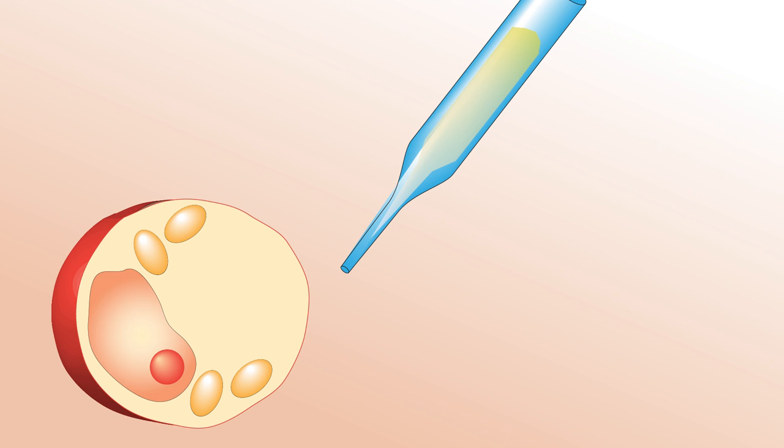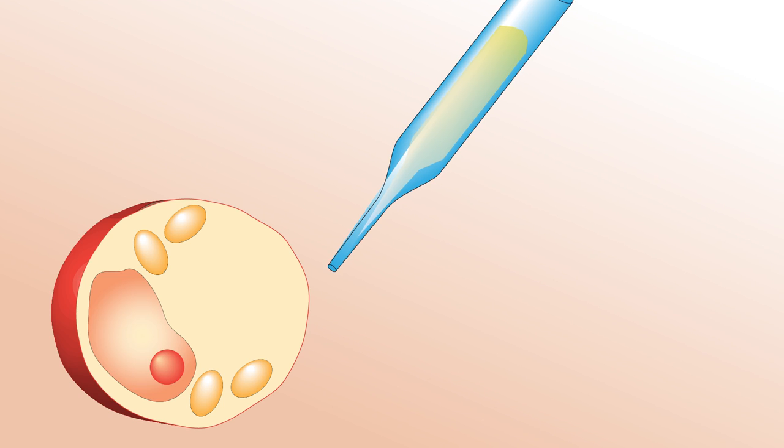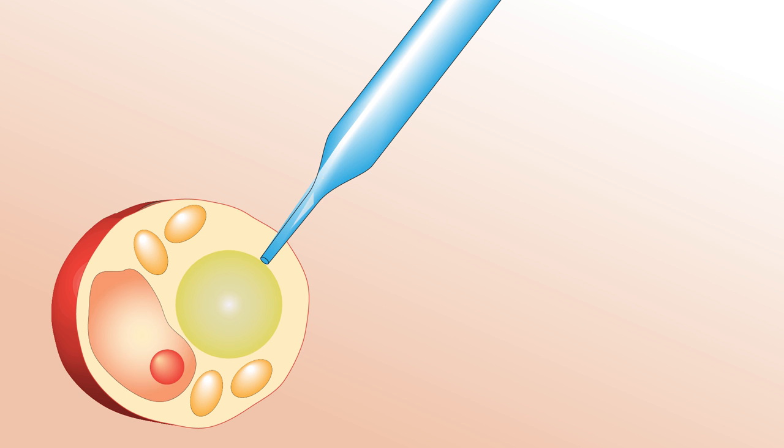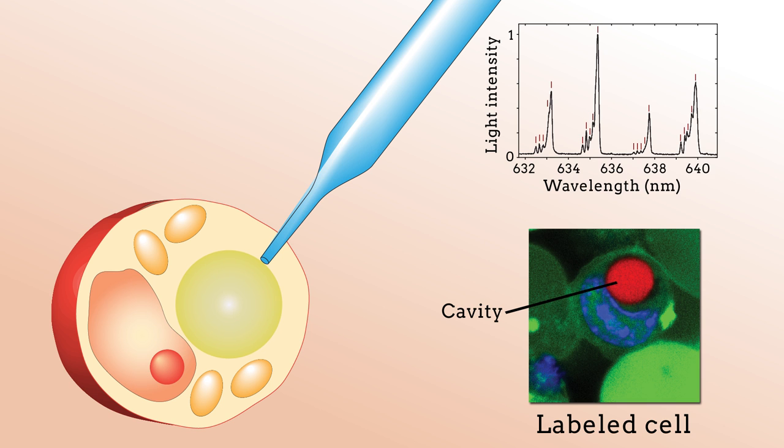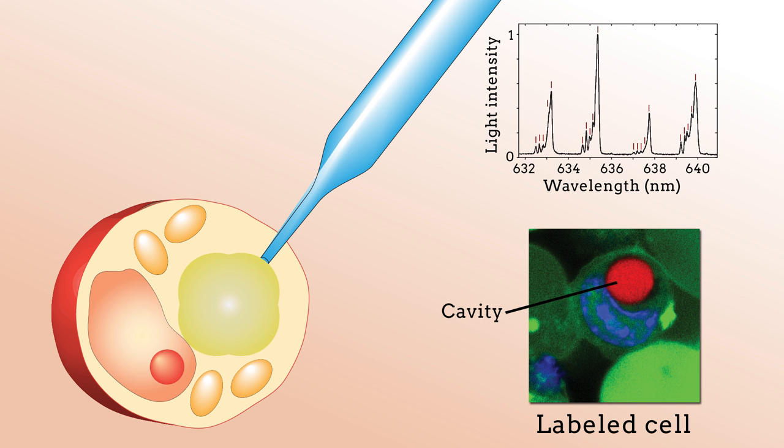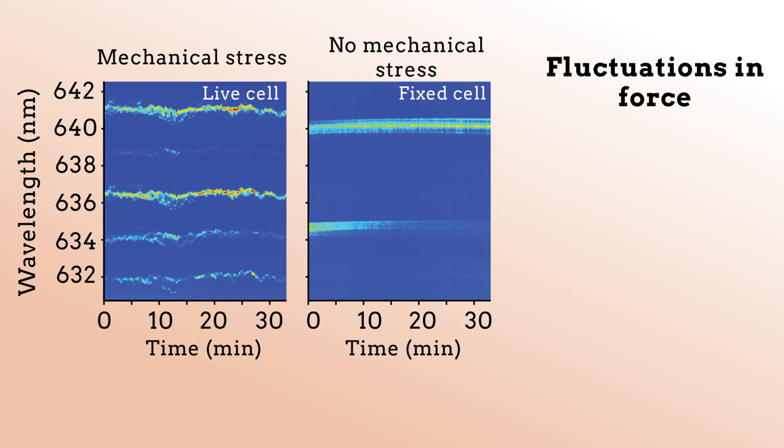The researchers first injected oil droplets mixed with dye molecules into cells and observed their emission characteristics. By monitoring changes in laser emission with the deformation of the oily optical cavities due to cell mechanical stress, the researchers could detect fluctuations in force ten times smaller than those registered by direct image-based analysis.